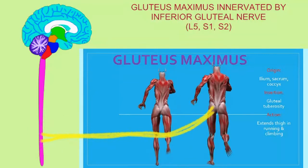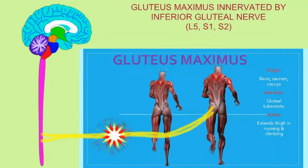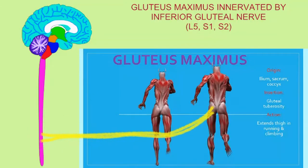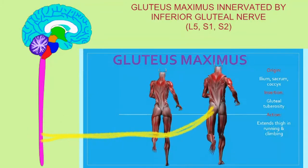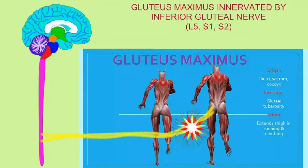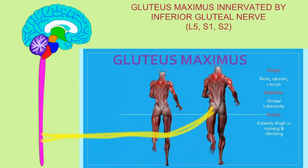The gluteus maximus is innervated by the inferior gluteal nerve.